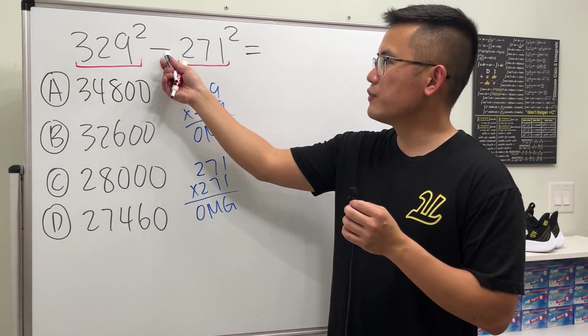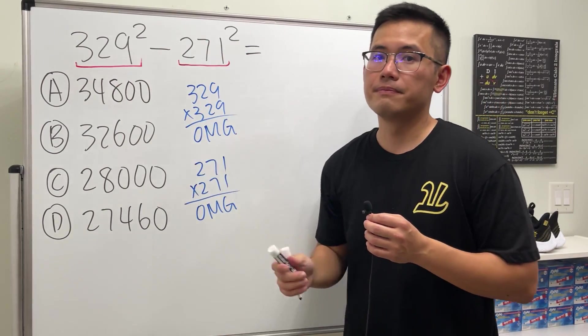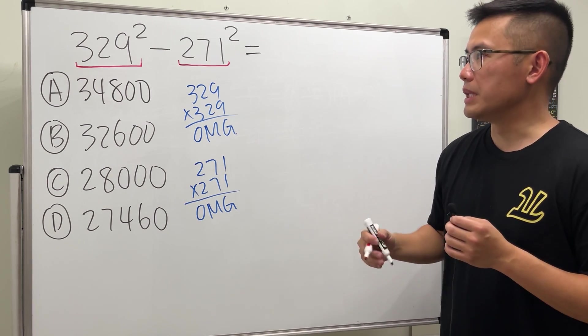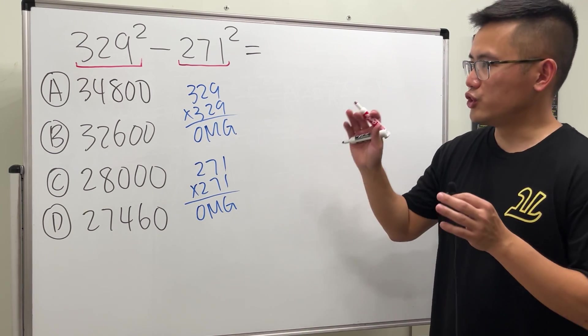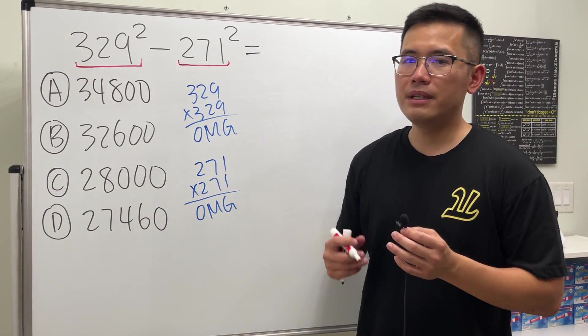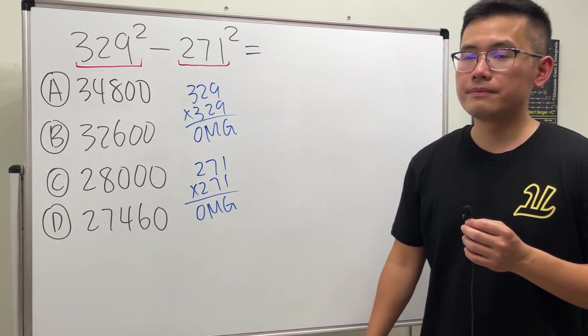But anyway, this is actually a very good question because the structure of it is a difference of two squares. It's good because we can actually use algebra to change the order of operations and make the computation easier.